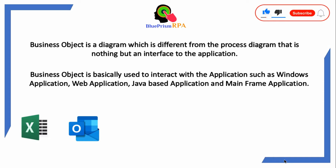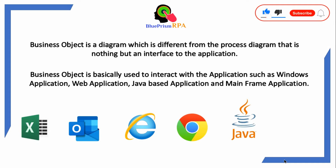Business objects are used to interact with applications such as Windows applications like Excel and Outlook, web applications, Java-based applications, and mainframe applications. So far you have learned how to make decisions in a process, how to perform calculations, how to store data — but that is not the actual process. The actual process starts when we interact with any application and perform tasks like launching an application, logging in, or clicking on specific buttons or elements.